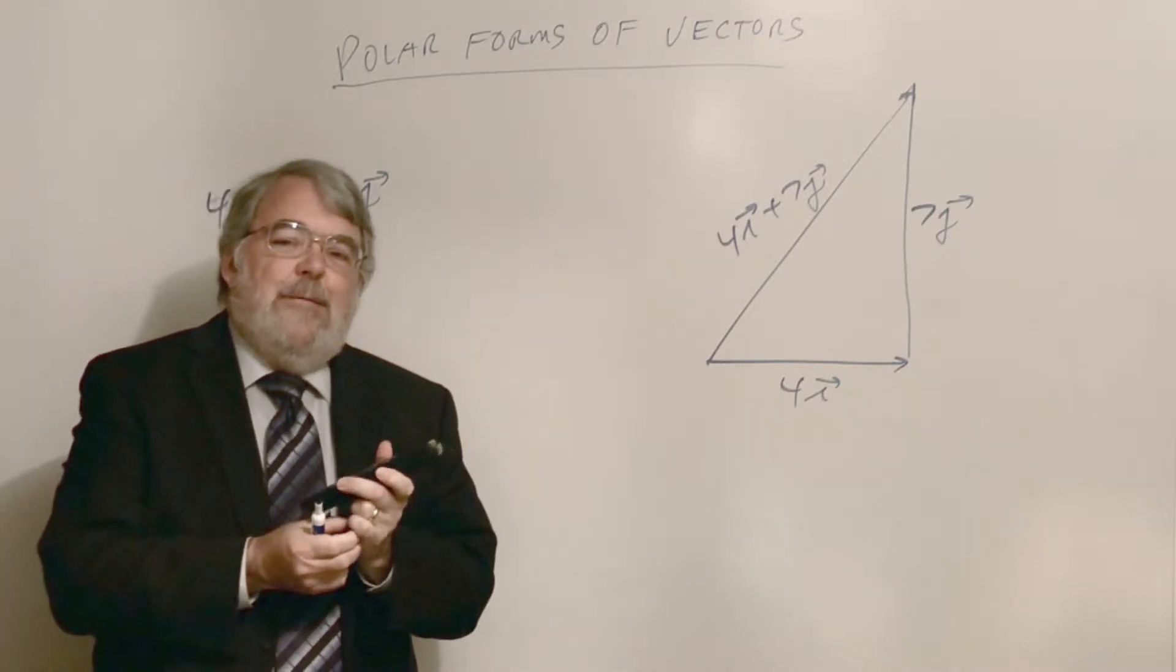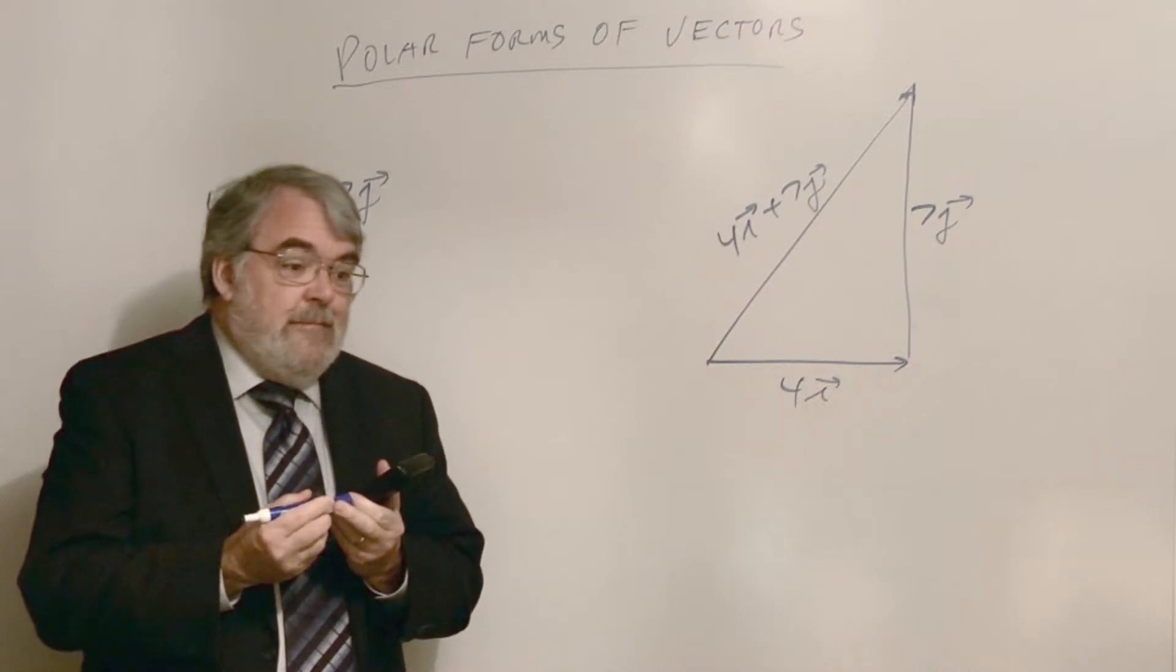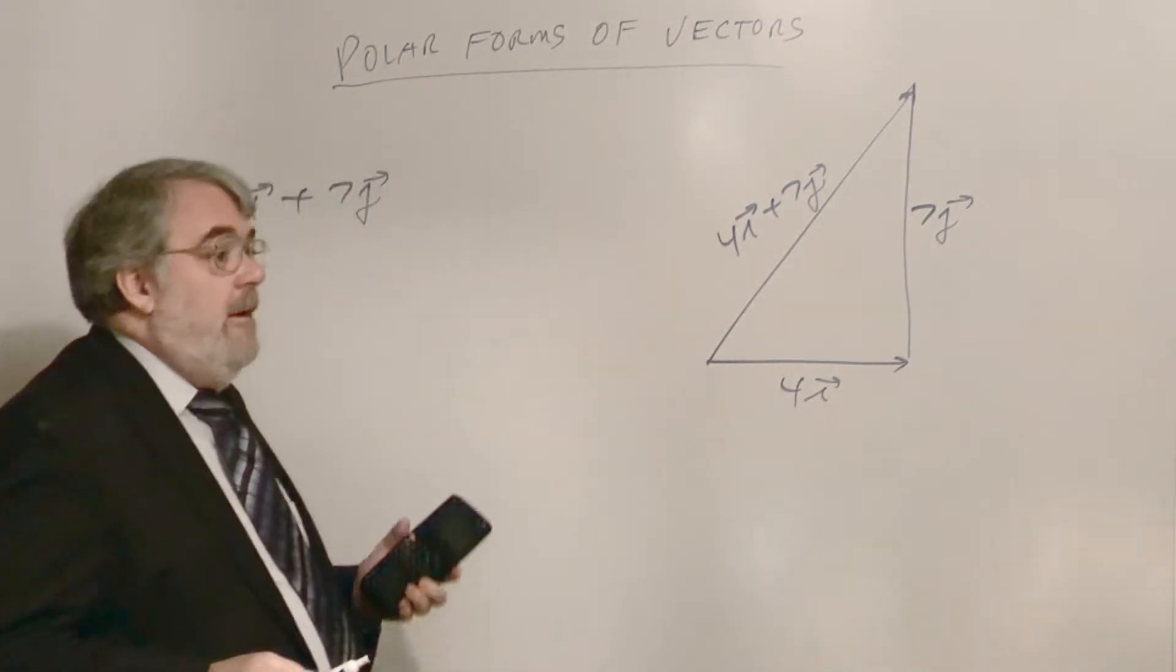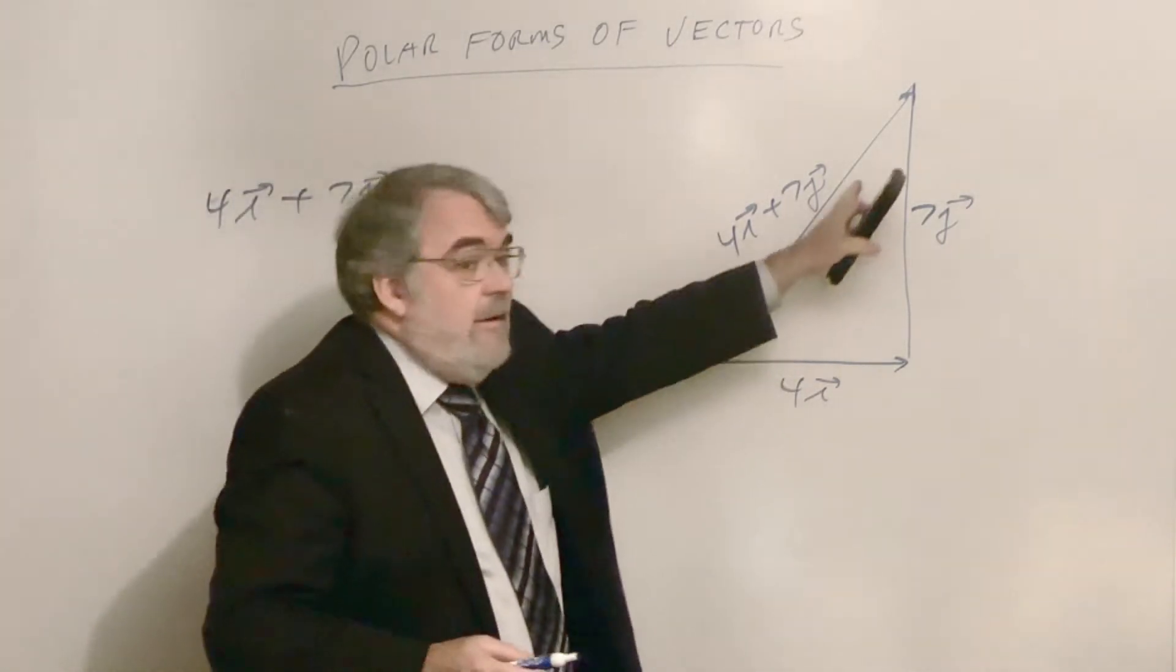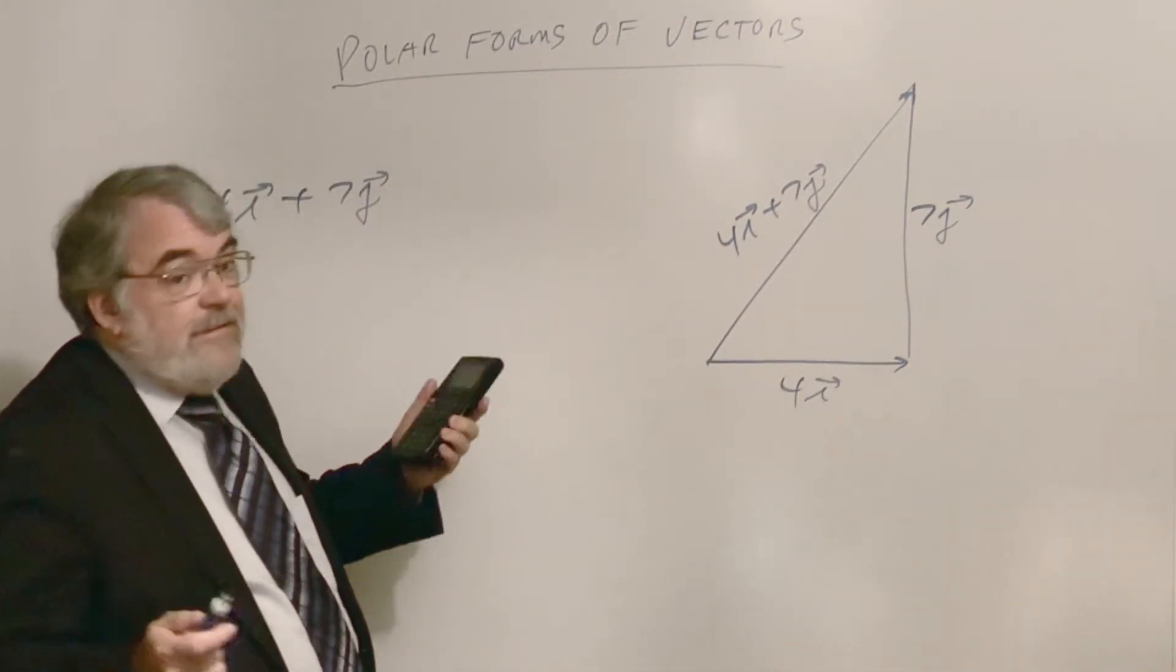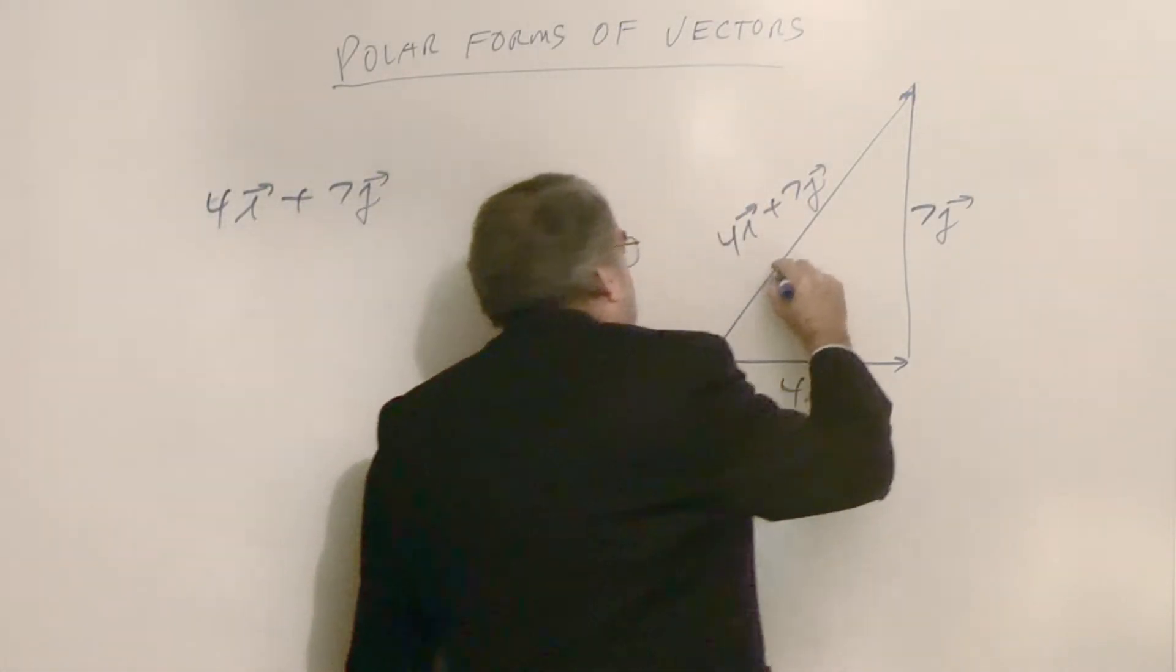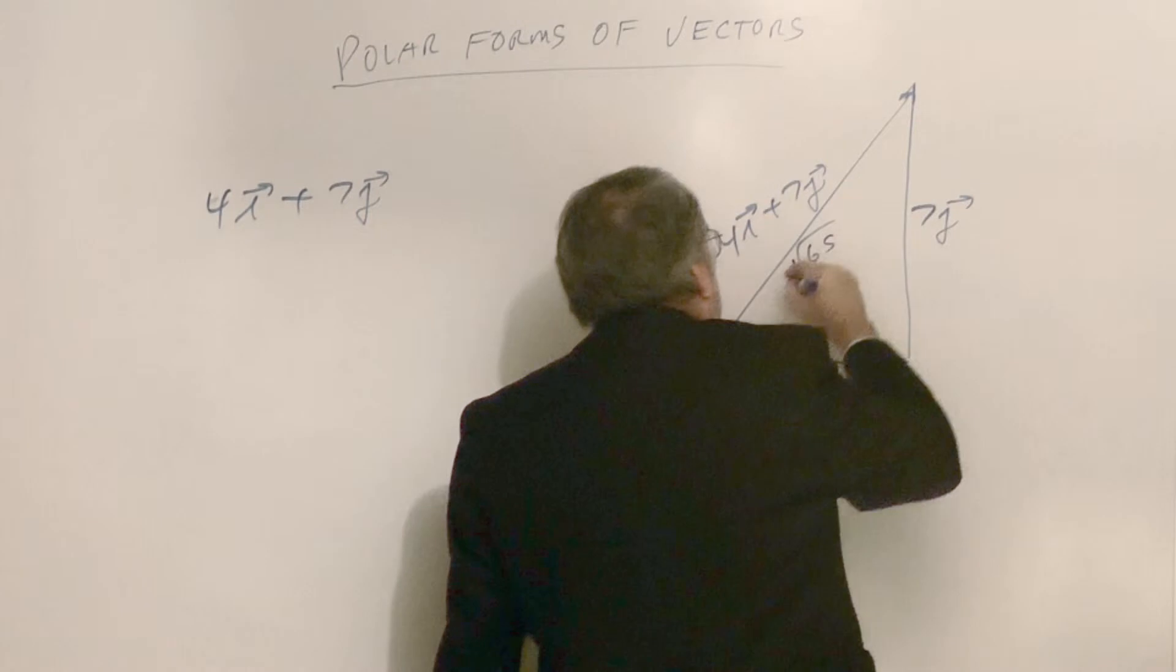Well, I hope you figured out the particulars of this vector in terms of its polar form. The magnitude of the vector is √65. It's 4 squared plus 7 squared. So, the square root of 4 squared plus 7 squared is the square root of 65.